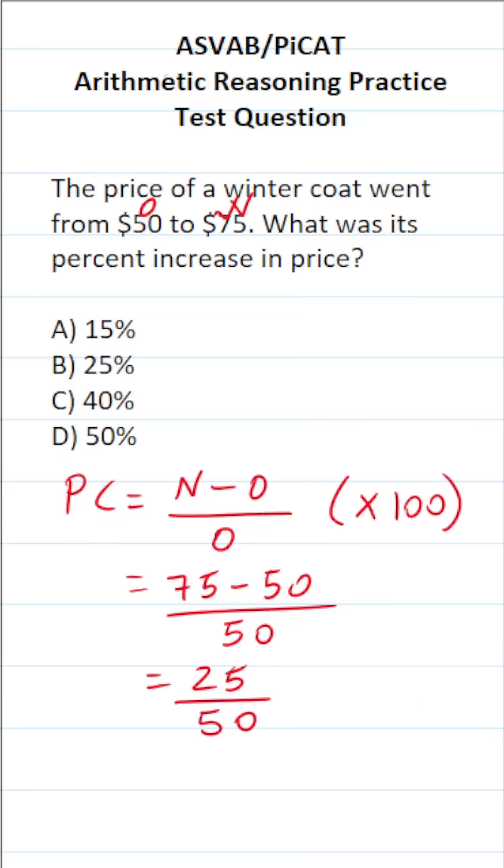Now there is a very quick way we can convert this fraction to percent. Again, anything over 100 is a percent. So 5 over 100 would be 5%, 12 over 100 would be 12%. What can we do with this fraction to make it have a denominator of 100? Well, we can multiply top and bottom by 2. 25 times 2 is 50, 50 times 2 is 100.